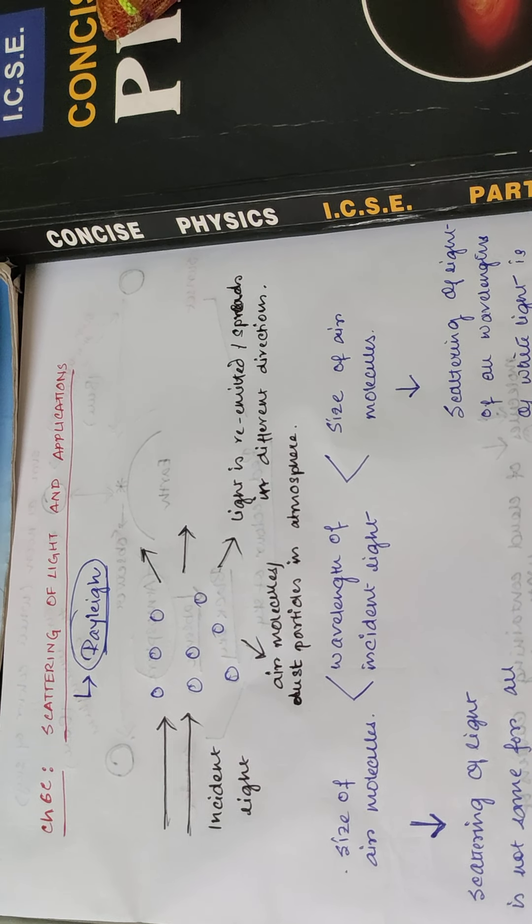Throughout the day, if we look at the sun directly, the light we receive is predominantly red because it is the least scattered. But the light coming from the entire sky in different directions is blue, because blue light is scattered in all possible directions across the sky. That is why we see the bluish color of the sky.